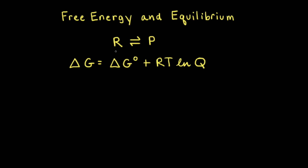Let's say we have a generic reaction where reactants turn into products. Our goal is to think about the relationship between free energy and this reaction when it comes to equilibrium. First, we need to consider the equation that allows us to calculate non-standard changes in free energy, delta G. We can think about delta G as the instantaneous difference in free energy between reactants and products. Delta G is equal to delta G naught plus RT natural log of Q.